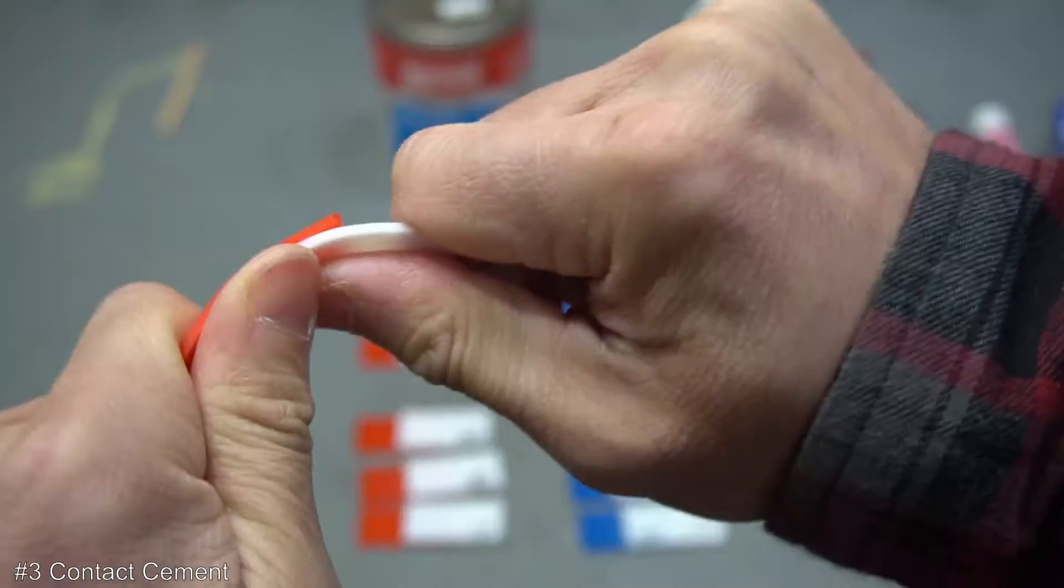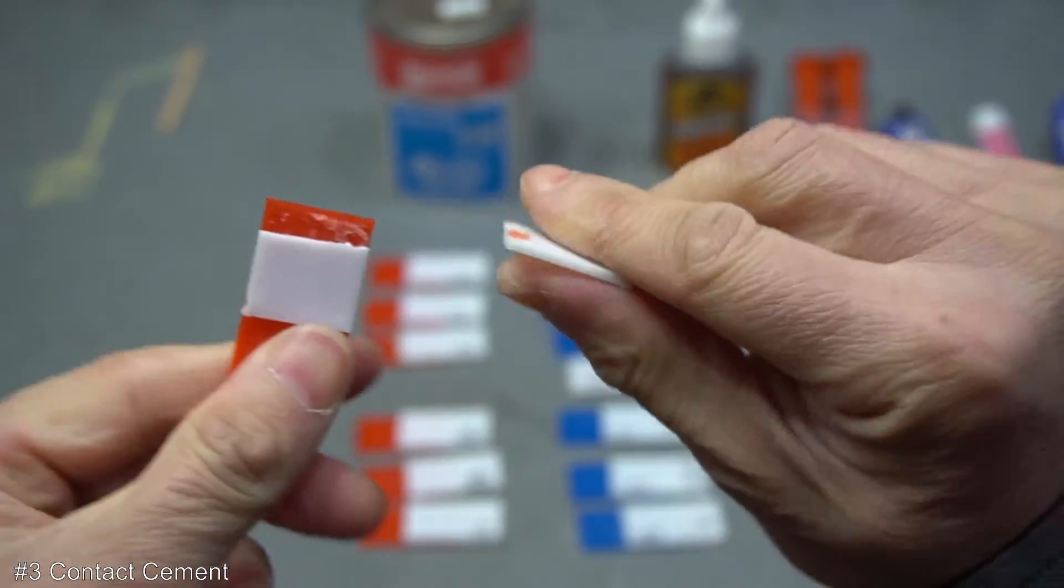In the number three spot, contact cement. This actually held up surprisingly well. I actually didn't think this would be that strong, but it worked out really well with the PLA breaking before the glue.